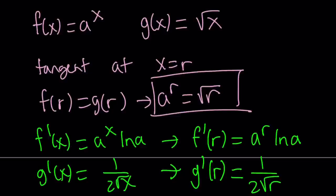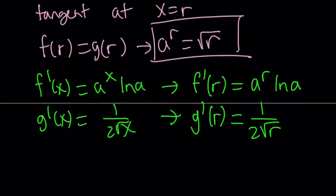So we have two functions that are tangent. So that means they're going to have a common tangent. So the derivatives at x equals r should also be equal because that's going to give you the slope of the tangent at that point. They have a common tangent. So a to the power r ln a equals 1 over 2 times the square root of r. So how do we simplify something like this?